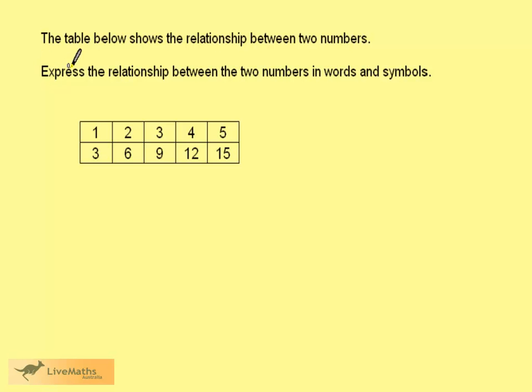The table below shows the relationship between two numbers. We want to express the relationship between the two numbers in words and symbols. Let's call the numbers in the top row of the table the first number. Those in the bottom row would be called the second number.